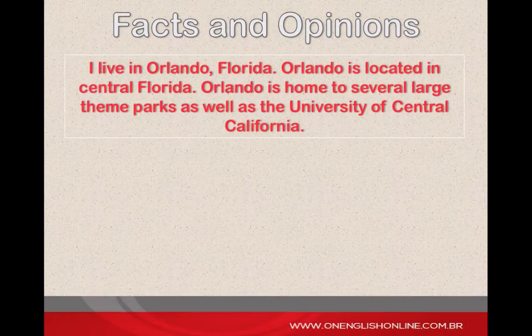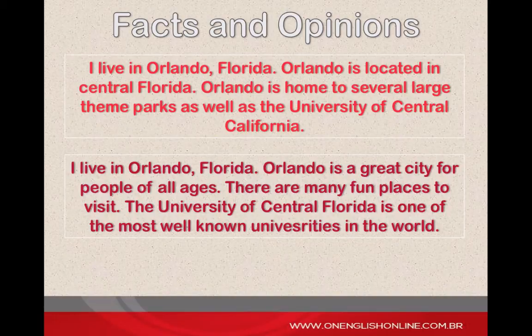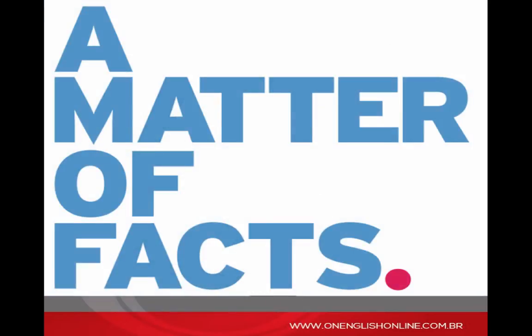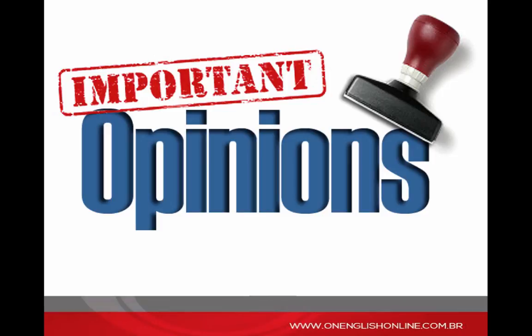A fact is information that can be verified or proved — a fact is always true. An opinion is what someone thinks or believes to be true; an opinion may be true or false. It is rare to write a paragraph made up entirely of facts or entirely of opinions. When you are trying to write an opinion paragraph, it is important to include facts. If you choose helpful supporting facts with examples that the reader can clearly relate to, your opinion paragraph will be stronger. You might even convince readers to agree with you, and that is often the goal of this kind of writing.